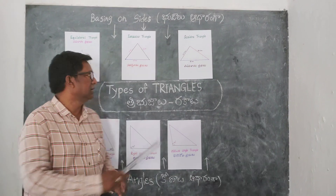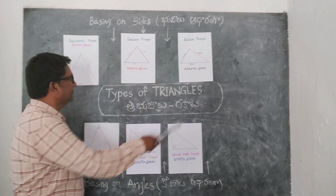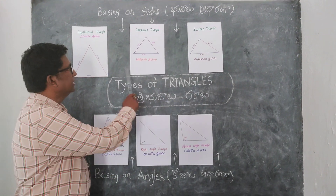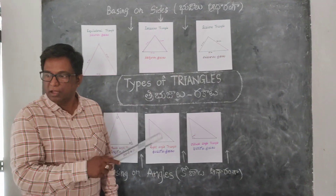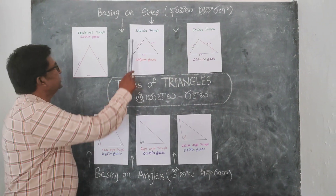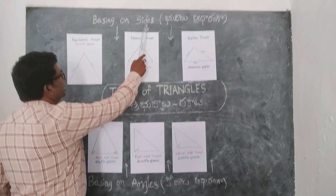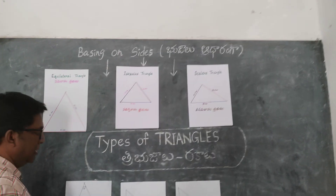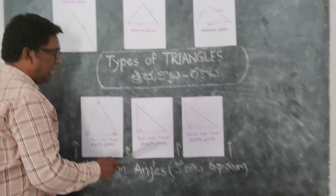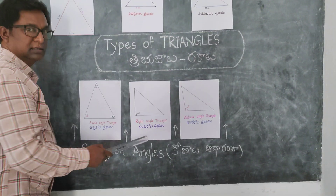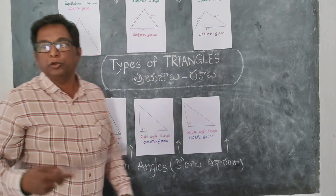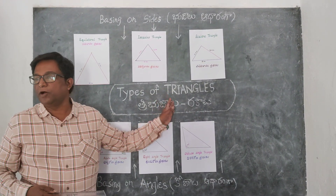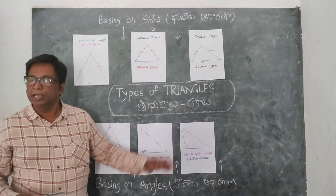See children, here are different types of triangles. These triangles are divided on the basis of sides and angles. Now we are going to sing these types of triangles in the form of a song.